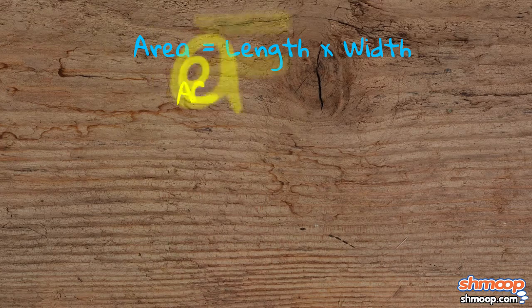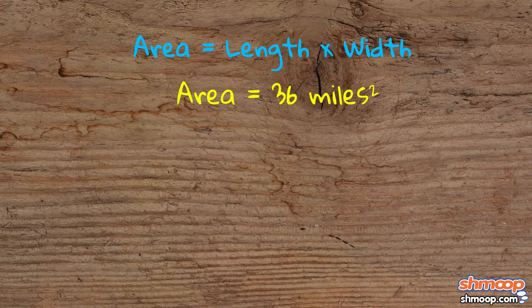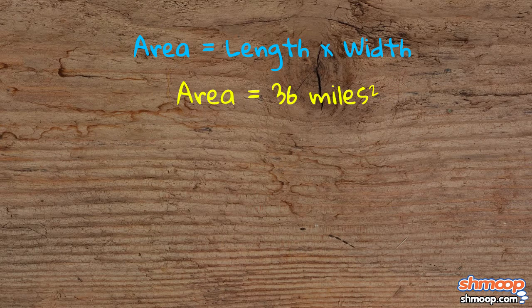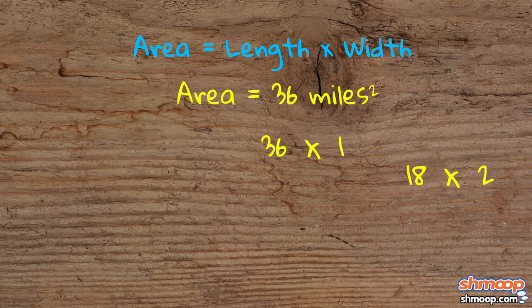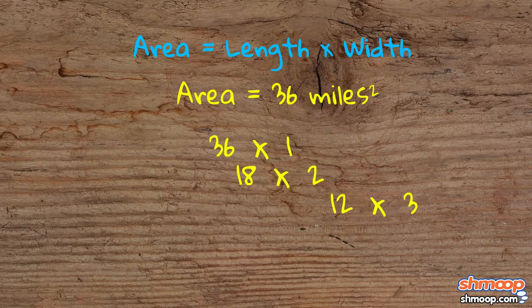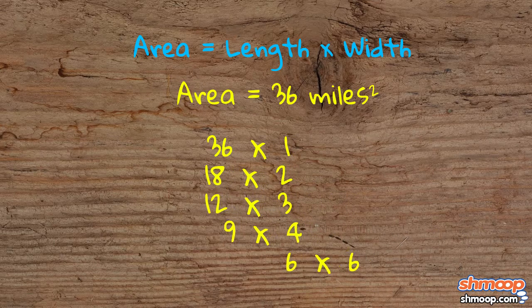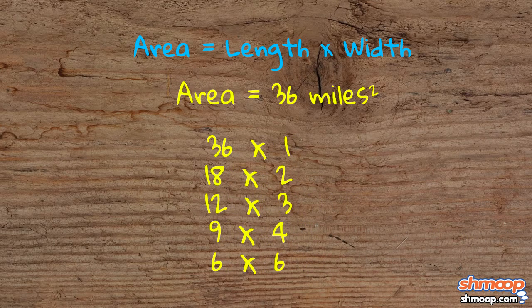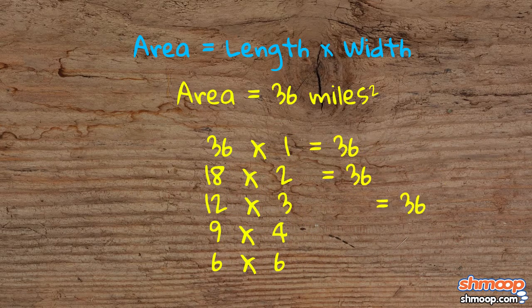To get an area of 36 square miles, which is what he's shooting for, here are our options for the rectangle's dimensions. It could be 36 by 1, 18 by 2, 12 by 3, 9 by 4, and 6 by 6. With any of those dimensions, you could multiply the length by the width to come up with 36.